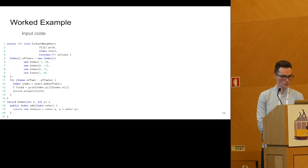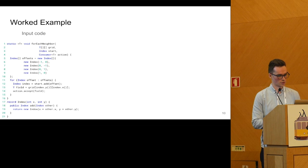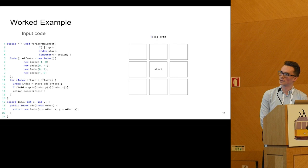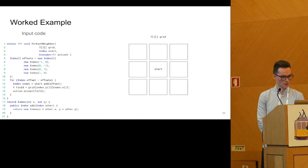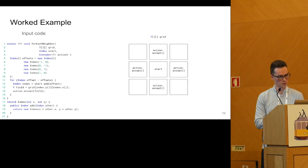To illustrate how this works — how we collect the trees and how we compare them — I'll show an example workload. This is a very simple workload, a method called for_each_neighbor that takes a 2D grid as an argument, a starting position in the grid, and some callback. It invokes the callback for each neighbor of the starting position. I'll show how we record the trees for the optimization.